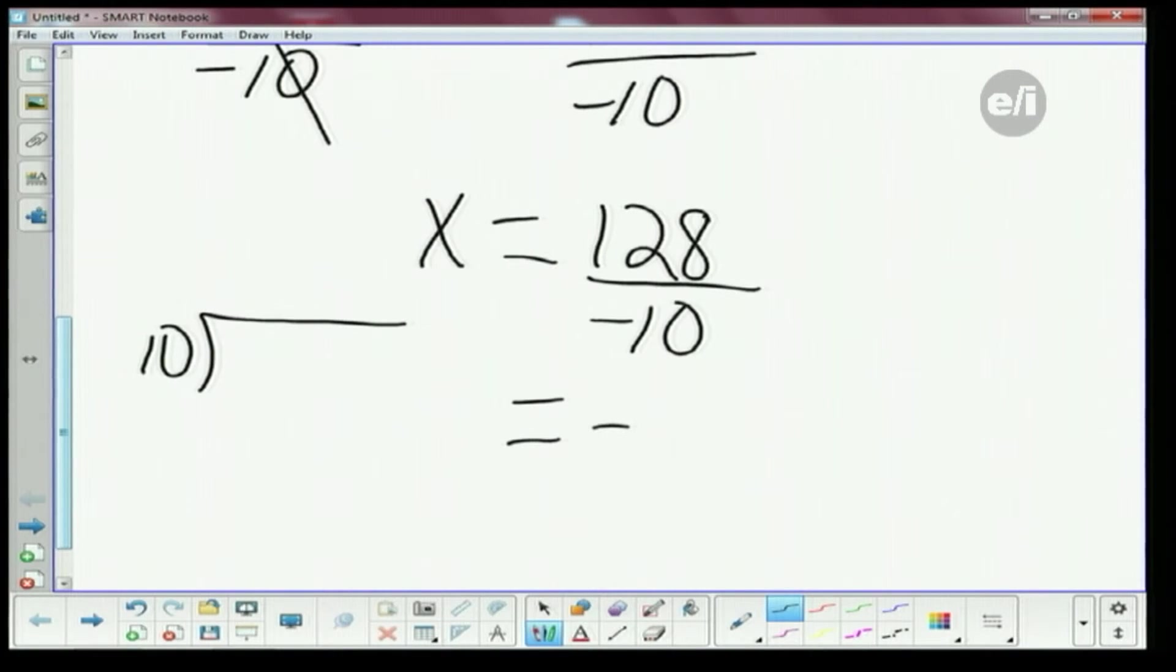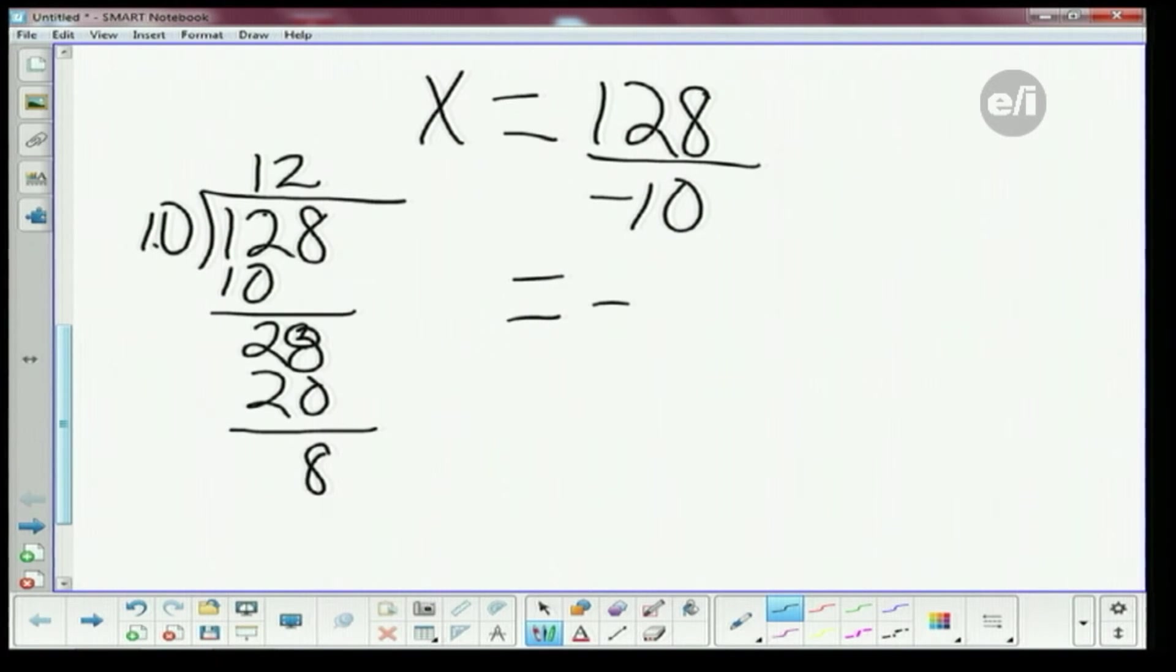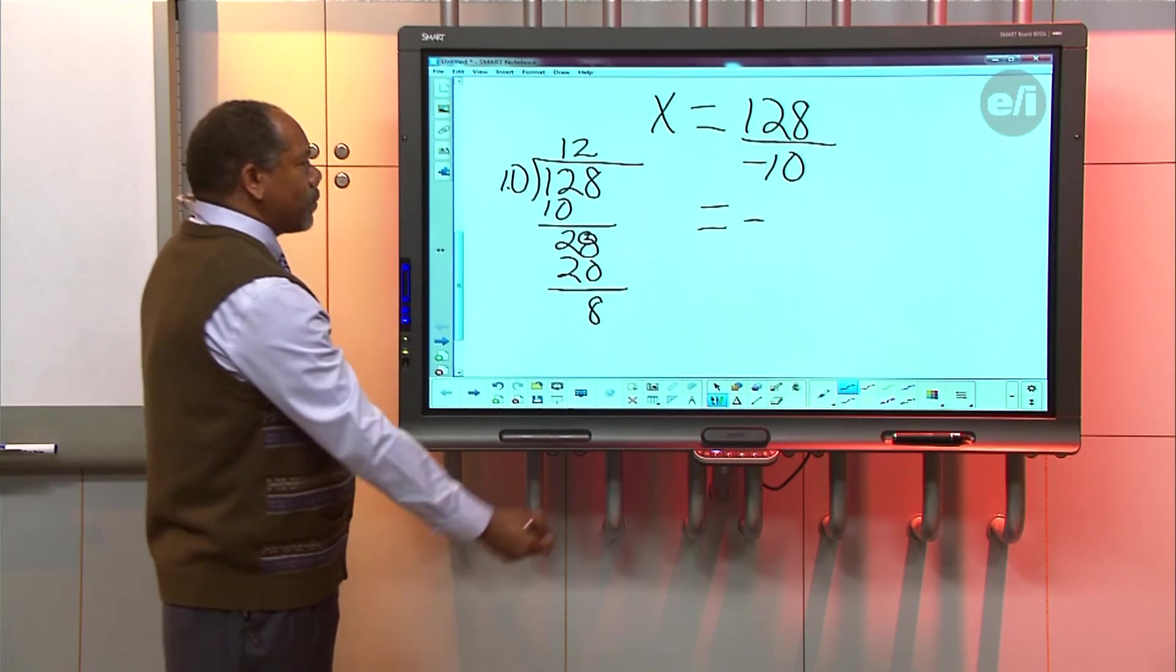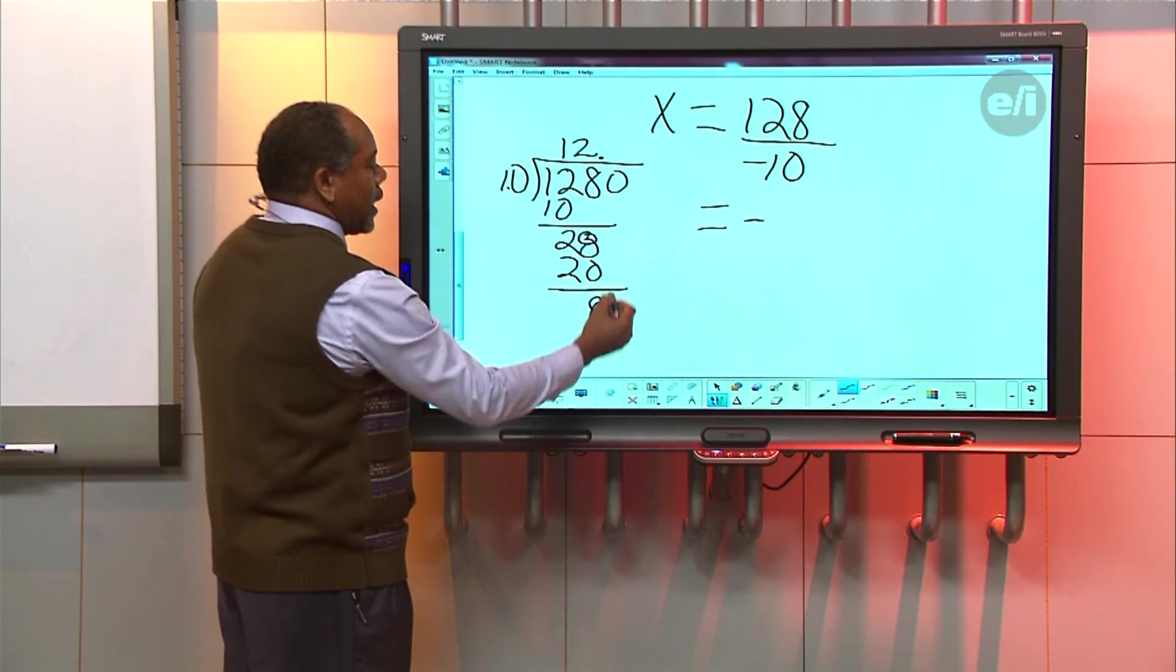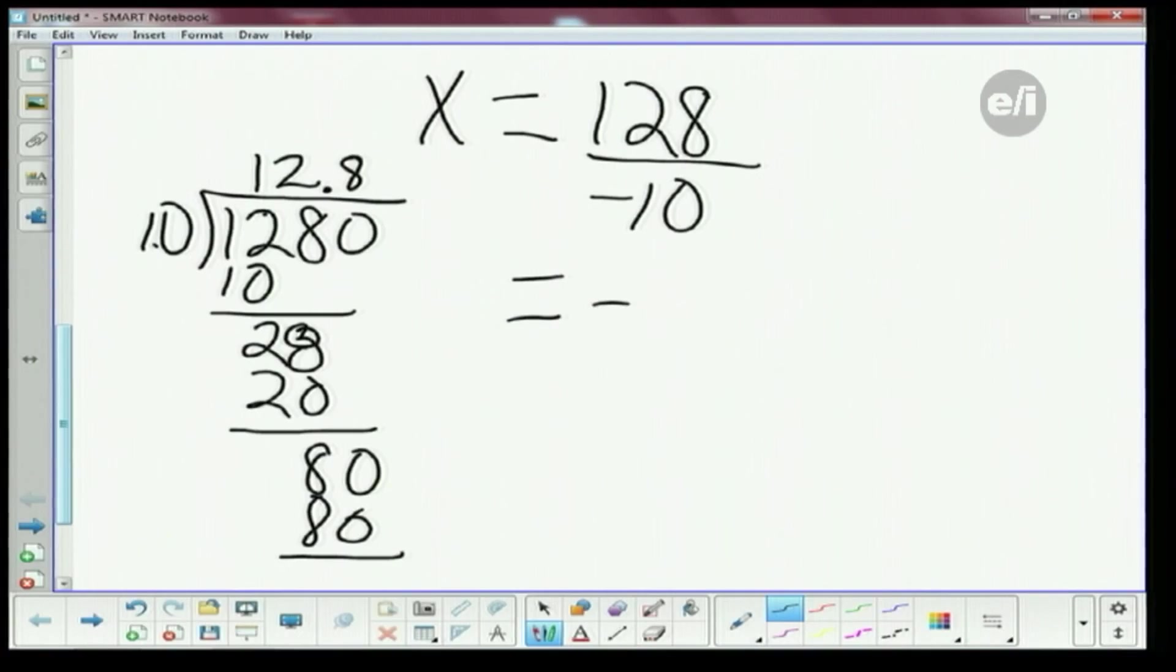Now if I take 10 into 128, 10 goes into 12 one time. 10 times 1 is 10. I'm gonna subtract and get 2. Bring my 8 down. 10 goes into 28 two times. And I'm gonna get 20. And I'm gonna bring the 8 down. Now notice that 10 doesn't go into 8. So what am I gonna have to do? I'm gonna put a decimal here. Add a 0 and bring that 0 down. 10 goes into 80 eight times. And that's gonna be my answer. So when I solve that, X is equal to negative 12.8.